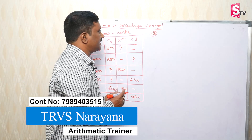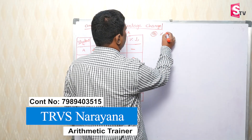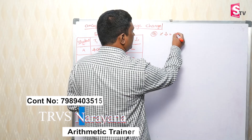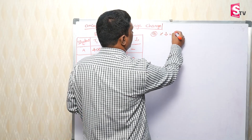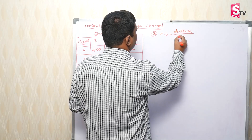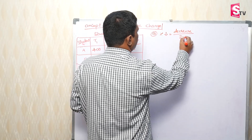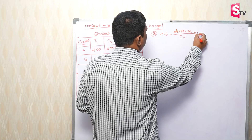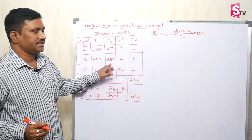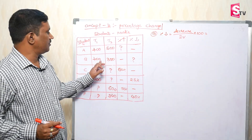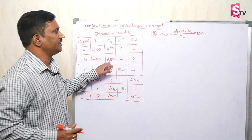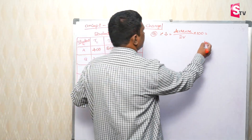Now we have the percentage decrease formula: decreased value divided by initial value, into 100. What is the decrease? 50 decrease. From 400 to 350 is a decrease of 50.